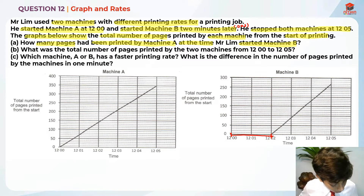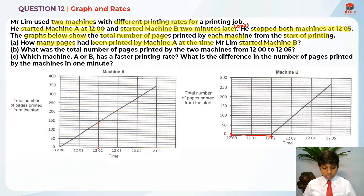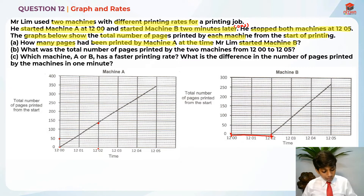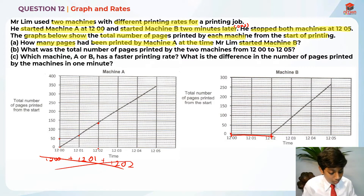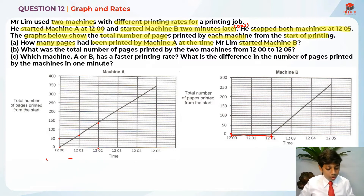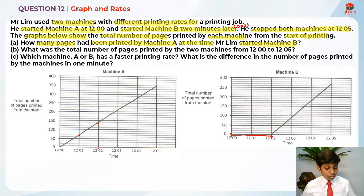So from 12 to 12.02, we just need to look at this point over here. Many students have this misconception that at 12 o'clock I printed zero, at 12.01 I printed this many, and when they are asked for 12.02 they add all of them up — adding the number printed at 12.00, then 12.01, then 12.02. But this is actually wrong. What you should be doing is just look at the point at 12.02, because that point is already the cumulative total printed up to that time.